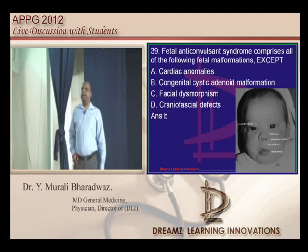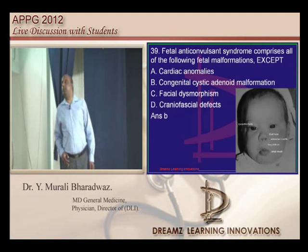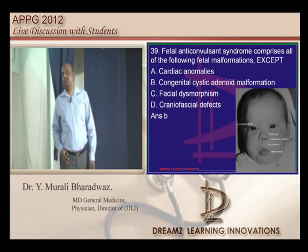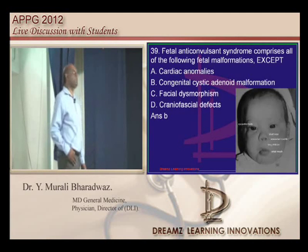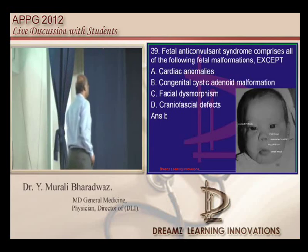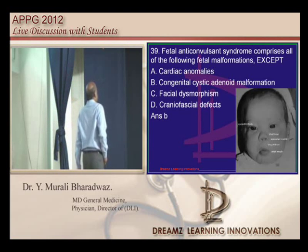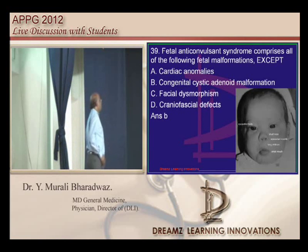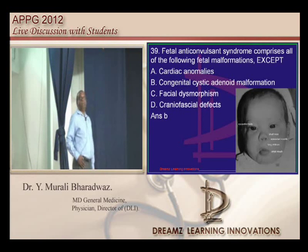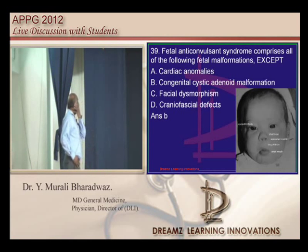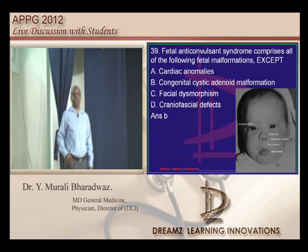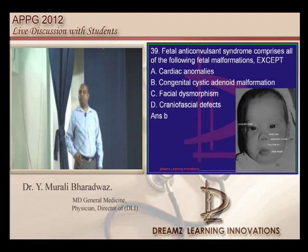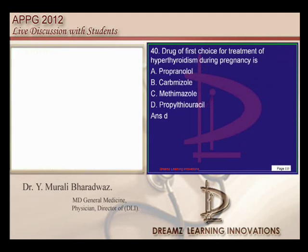What does anti-convulsant syndrome contain? Another quiz question — only common sense will help. Congenital cystic adenoid malformations are not known to happen, but cardiac anomalies, facial dysmorphism, and craniofacial defects are all well known to occur.